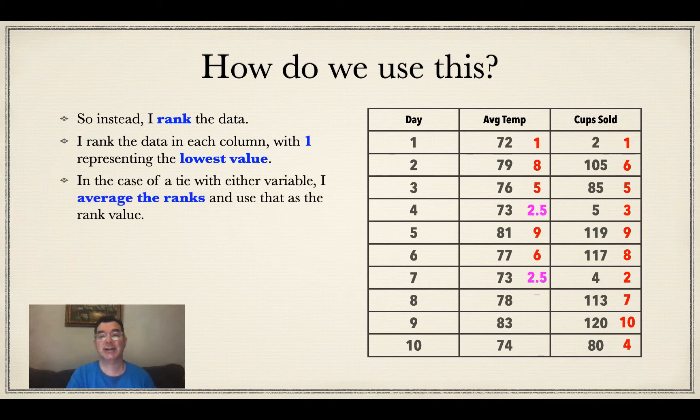You'll notice that there is a tie. There are two days that had an average temperature of 73, so I can't really rank one of them higher than the other. So since they were the second lowest and the third lowest values, I'm going to average those together. And instead of ranking one of them two and the other one three, since it would be completely random anyways, I'm going to rank both of them with the same value, which is going to be the average of two and three, and that's 2.5.